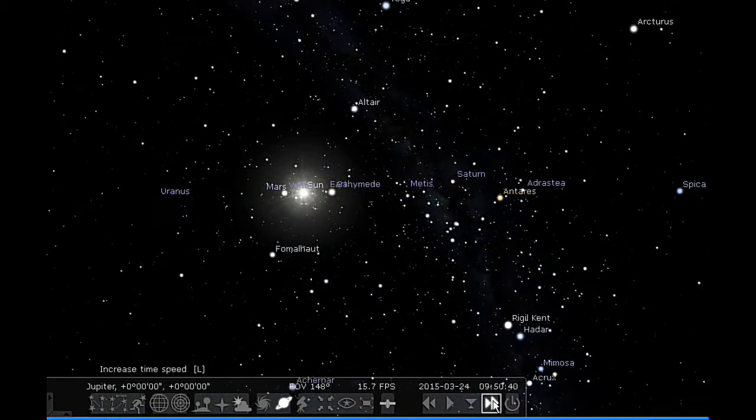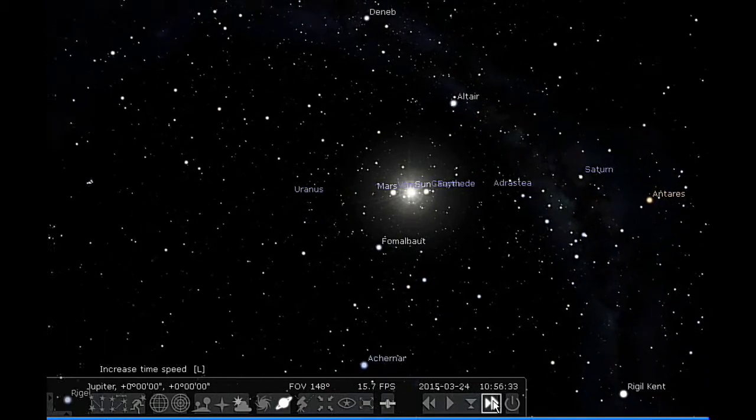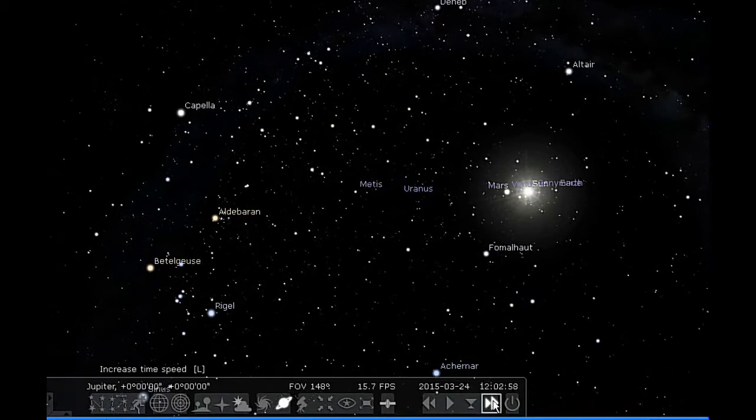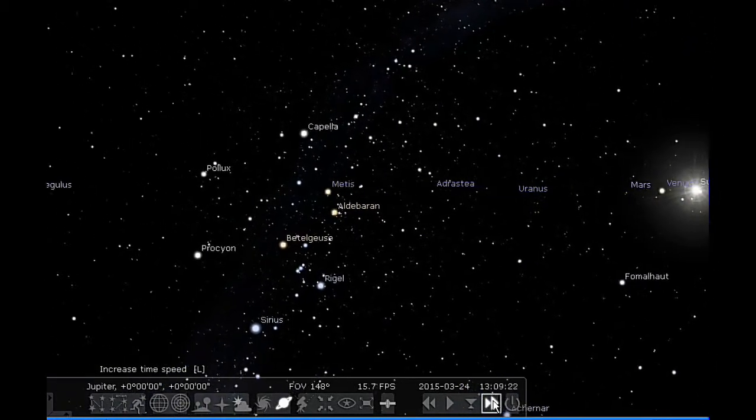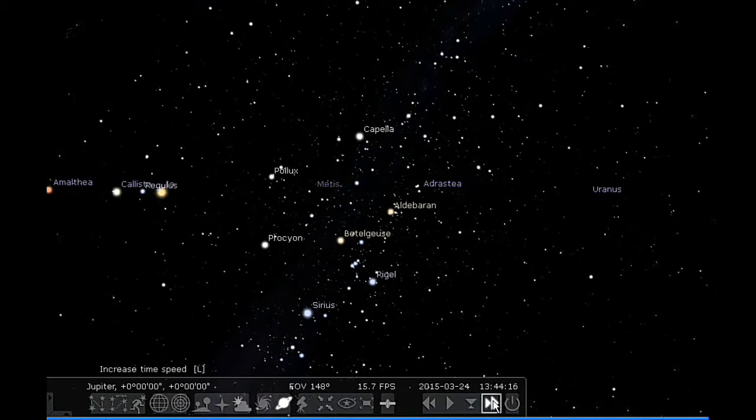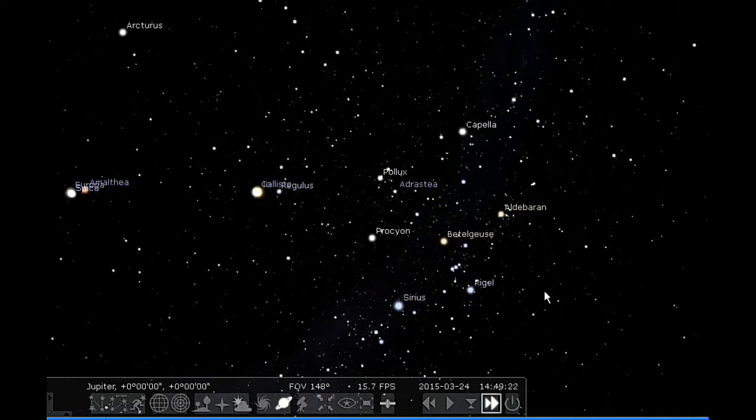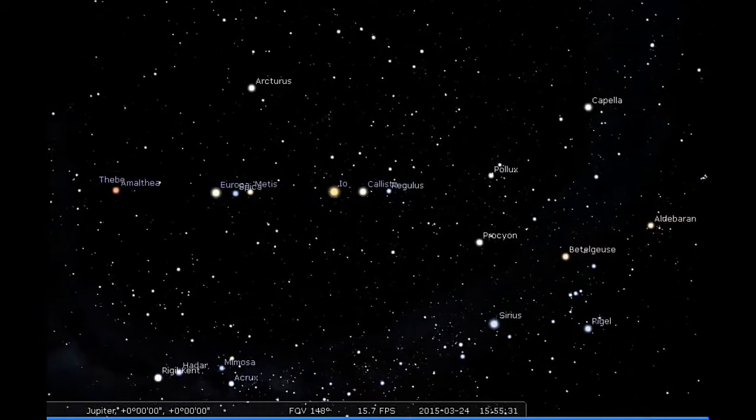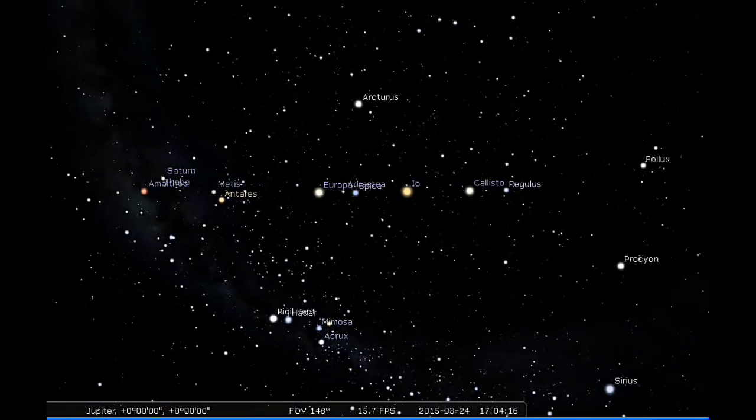There goes Ganymede's transit of Jupiter, just crossed Earth's point of view. It's going to be going between Jupiter and the sun to cast a nice shadow. Io just passed in front of Callisto and it's going to soon be passing in front of Europa.